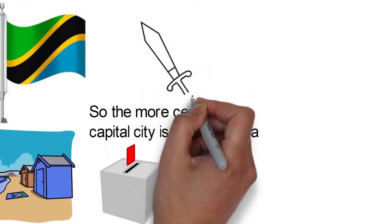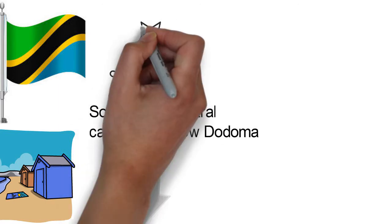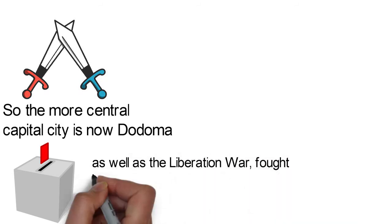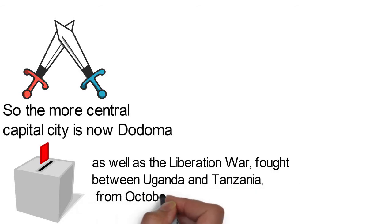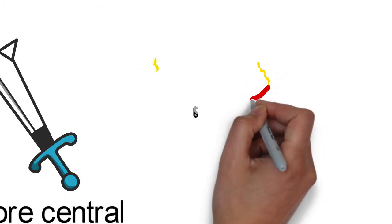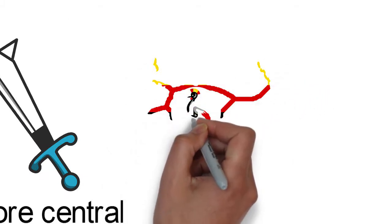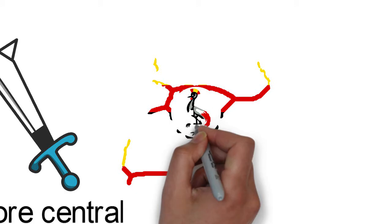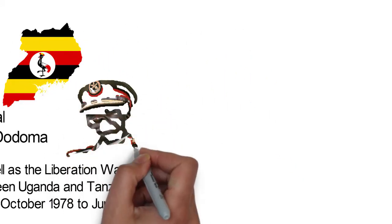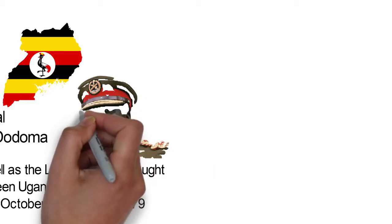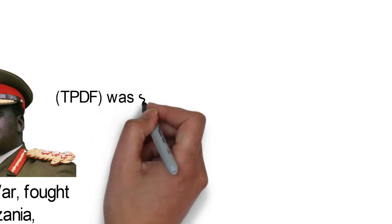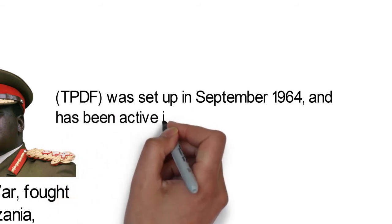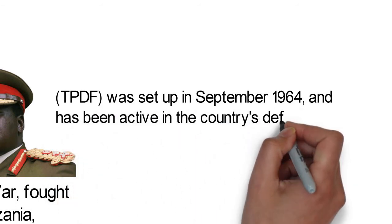The people of Tanzania will live to remember the Uganda-Tanzania War, which they call Vita vya Kagera, as well as the Liberation War fought between Uganda and Tanzania from October 1978 to June 1979. It was primarily to overthrow Idi Amin, the Ugandan president at the time. The war came as a result of a compromise of relations between Uganda and Tanzania when Amin overthrew President Milton Obote and seized power in 1971. The Armed Forces of Tanzania, called the Tanzania People's Defense Force (TPDF), was set up in September 1964 and has been active in the country's defense.